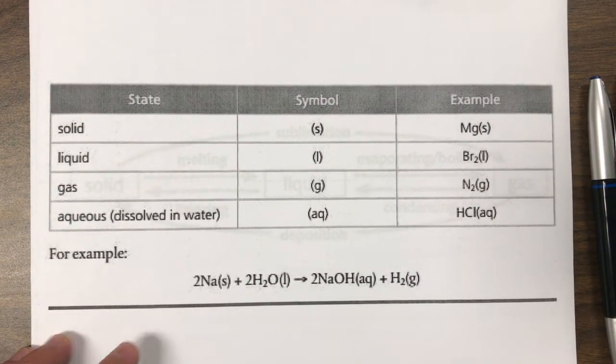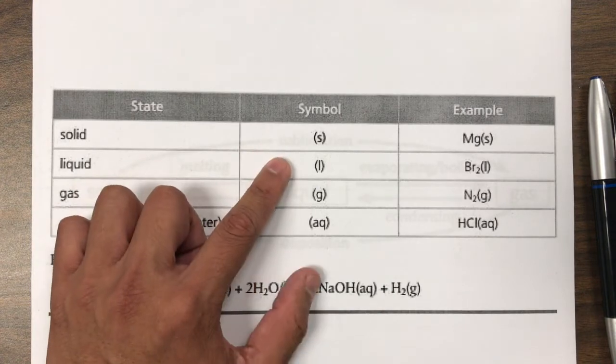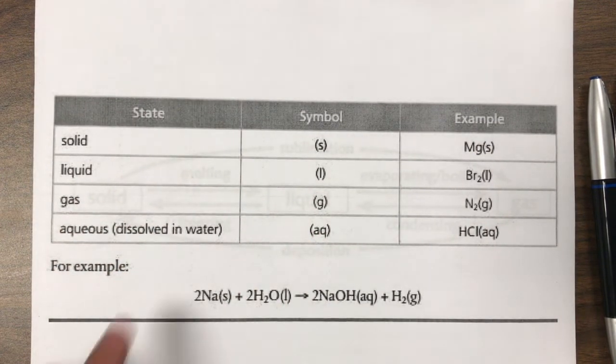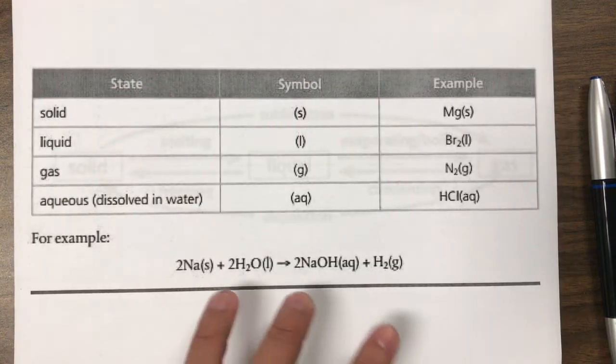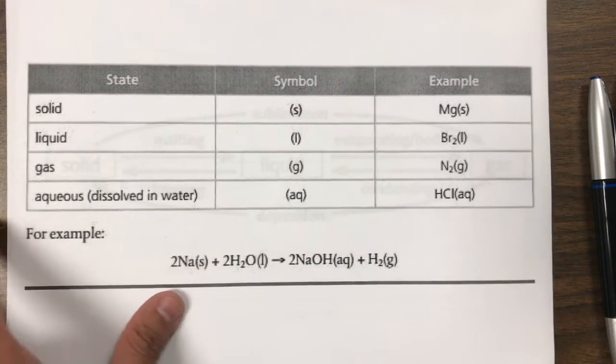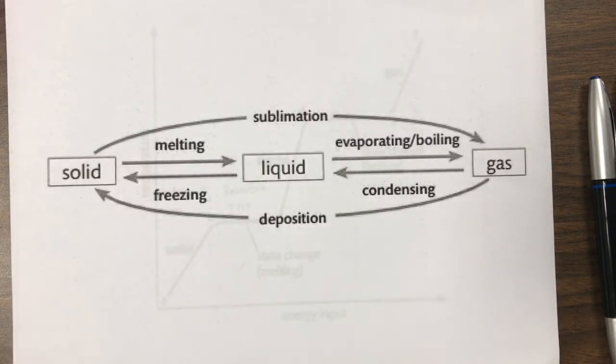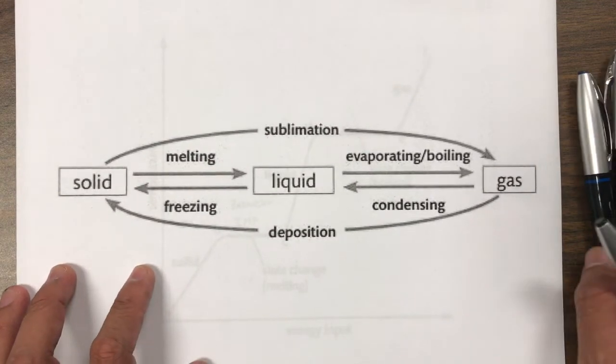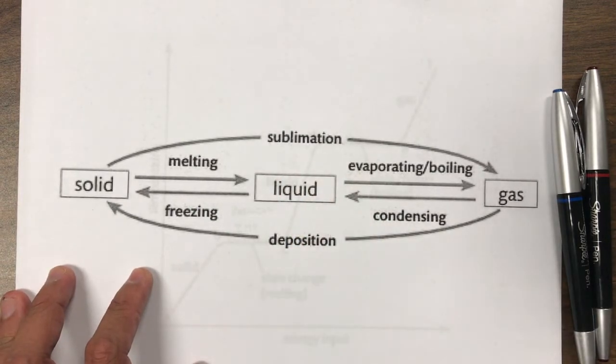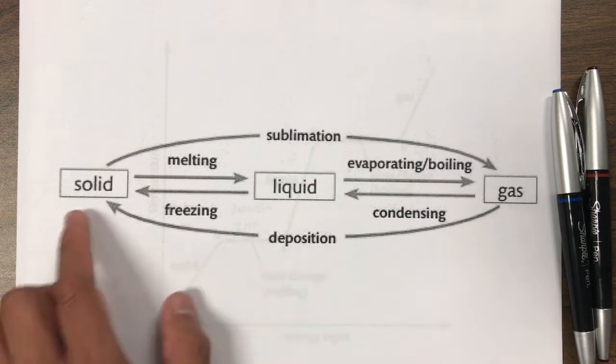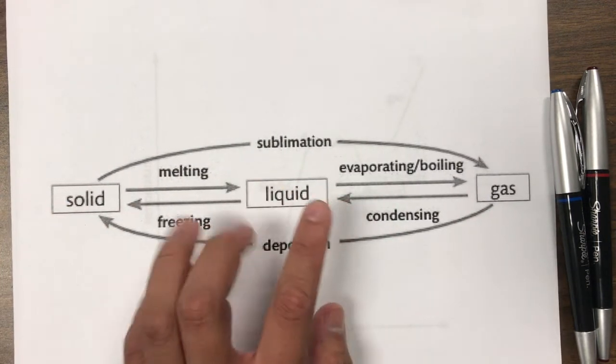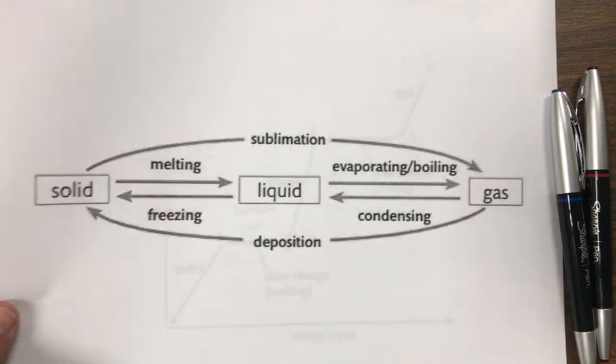As far as notation goes, we have S for solid, L for liquid, and G for gas. AQ, which stands for aqueous, just means dissolved in water. And so when you're writing your chemical equations, it's a good habit to make sure that you are writing the state symbols in it. You'll also be needing to be familiar with the terms for the phase changes, such as melting, freezing. Gas to solid is deposition. Solid to gas is sublimation. So make sure you know these terms as well.